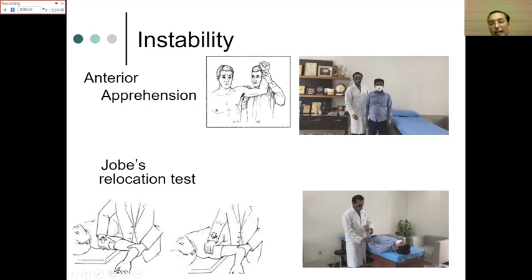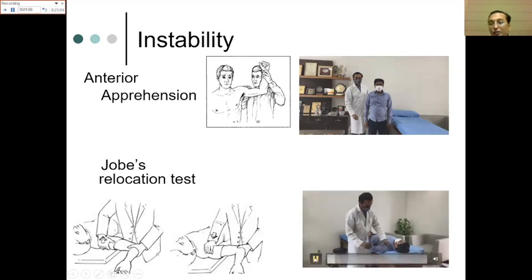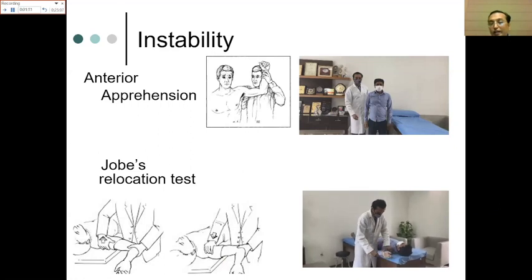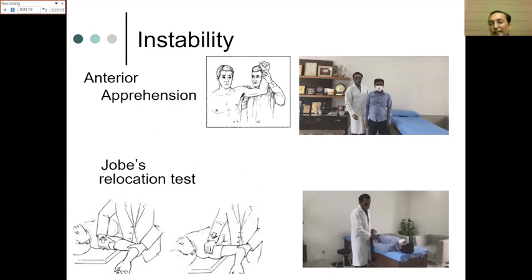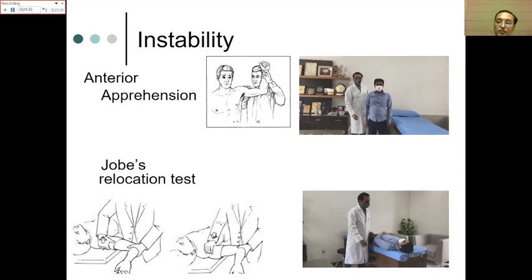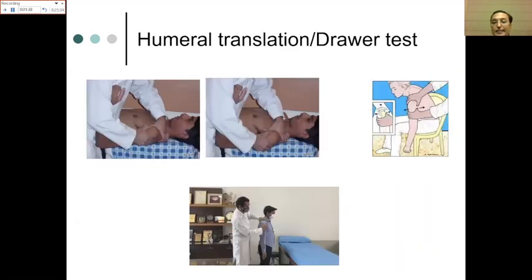To avoid causing dislocation, use the Jobe relocation test performed with the patient lying down, shoulder at the edge of the table. Abduct to 90 degrees plus, flex elbow to 90 degrees, apply external rotation. A hand placed on the front of the humerus holds it in — briefly lifting it causes apprehension, then replacing the hand restabilizes the shoulder. This provides the same information with less risk to the patient.